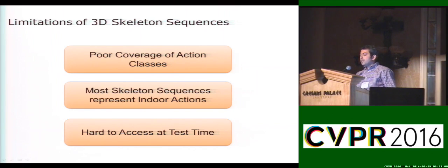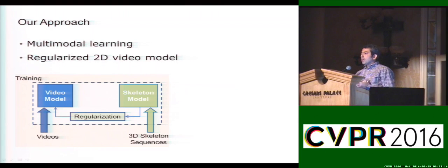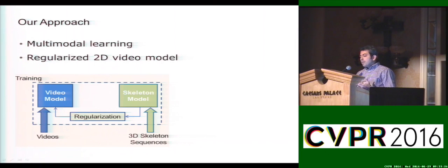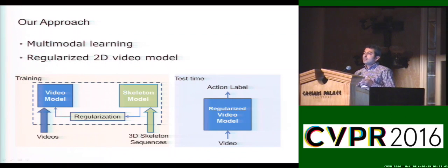It is also hard to obtain 3D human skeletons for outdoor scenes. More importantly, 3D skeleton data is not available at test time for videos we observe. To overcome this limitation, our approach uses 3D human skeletons only during training. We use a multimodal framework consisting of two different models — one for videos and one for 3D human skeletons — ensuring both models are learned in a unified way. The model learned on 3D skeleton sequences is used to regularize the learning of the video model, and at test time we only use the regularized video model.